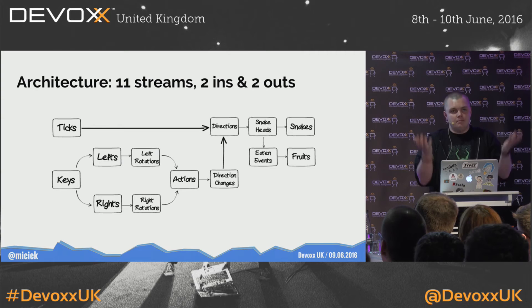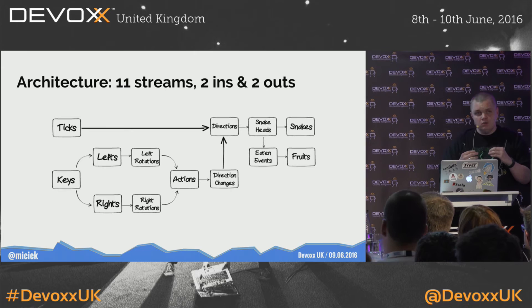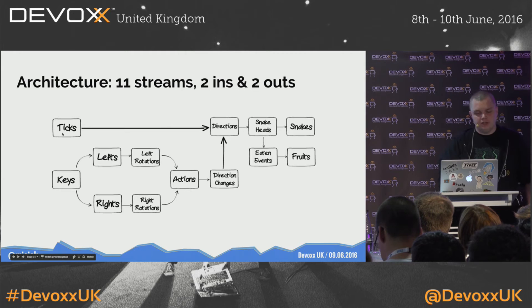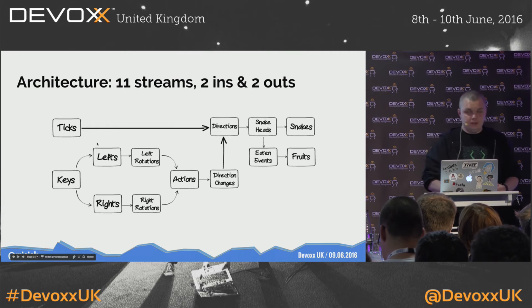We've built the snake bottom-up, implementing different small streams and connecting them with operators. We can also see the whole architecture as a flow diagram. The rectangles are the names of streams, and the arrows are the different operators. This is everything we did, in a nicer picture.